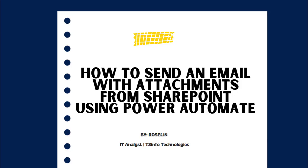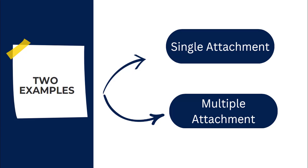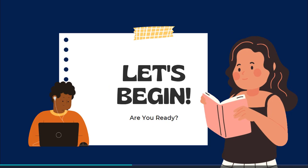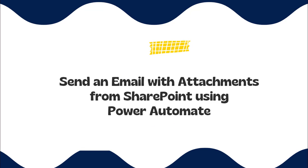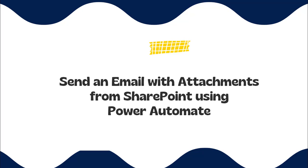Hello everyone, welcome to this YouTube channel. I'm Roslyn, and in this video we will see how to send an email with attachments using Power Automate Flow. We are going to see two different examples: one is to send an email with a single attachment from SharePoint, and another is to send an email with multiple attachments. The flow we are going to create supports both single and multiple attachments.